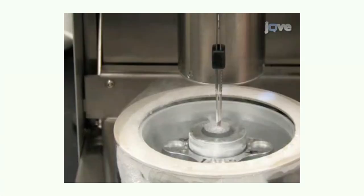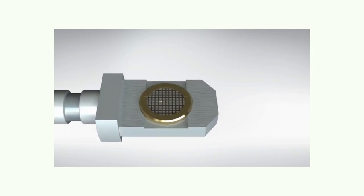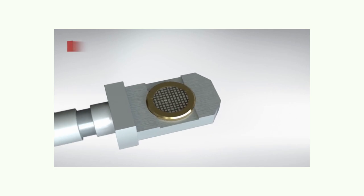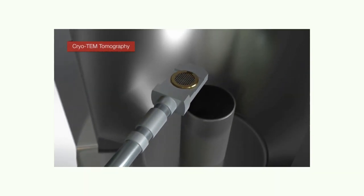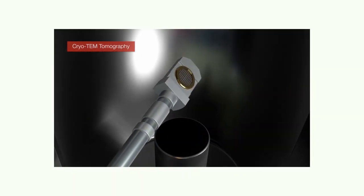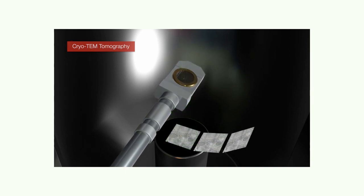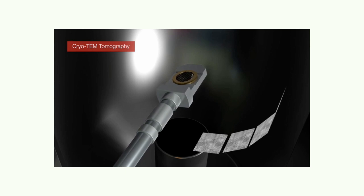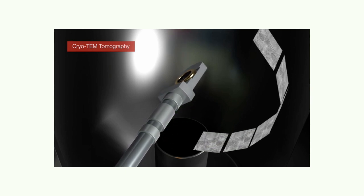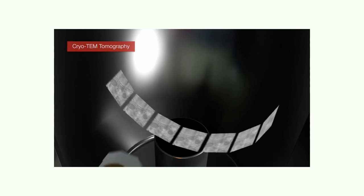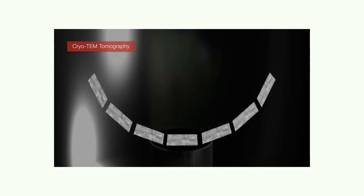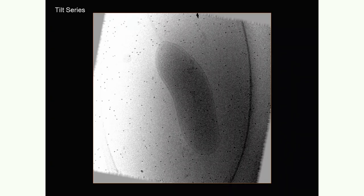We take this little grid and put it in a cartridge that we insert into an electron microscope. We take projection pictures of it — each one at different angles, getting different views of this particular grid. With this, we assemble what we call a tilt series.